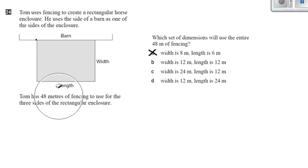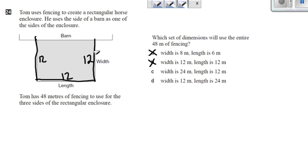If you read it correctly all you have to do is just add. So what if the width is 12 and the length is 12? 12 plus 12 plus 12 is only 36 meters, not the 48 meters we need.